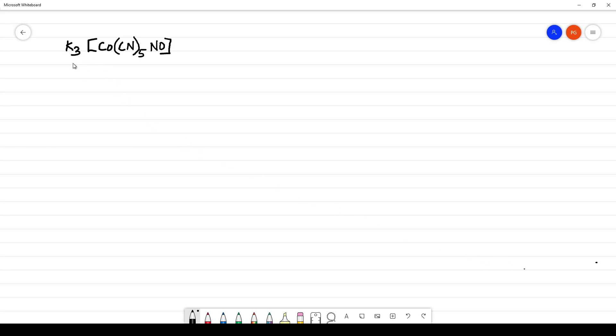IUPAC nomenclature of this coordination complex K3[Co(CN)5NO]. First, what we have to do? We have to identify the anionic or cationic complex.